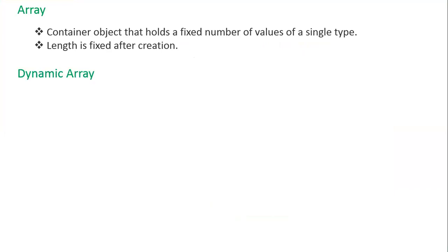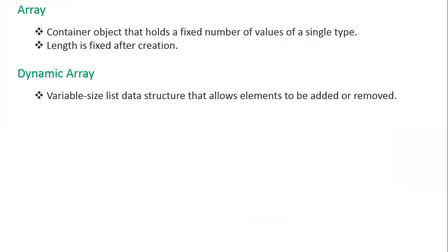Then comes dynamic array. A dynamic array is a variable-size list data structure that allows elements to be added or removed. Dynamic array overcomes the limit of static array which has a fixed capacity that needs to be specified at allocation.